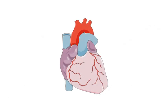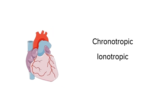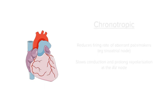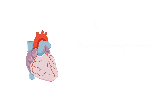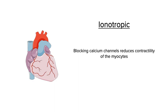Things get a bit more complicated when we move on to the heart. Non-dihydropyridines have both negative chronotropic and negative inotropic effects. Calcium influx into pacemaker cells is a very important process in the generation of action potentials that spread through the heart and generate myocyte contraction. By giving calcium channel blockers, we reduce the firing rates of pacemakers such as the sinoatrial node, and we also slow conduction and prolong repolarization along the atrioventricular node. These two effects simultaneously slow down the heart rate. Additionally, by blocking calcium channels we reduce the contractility of myocytes and thus the inotropy of the heart.